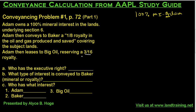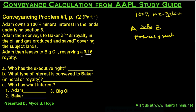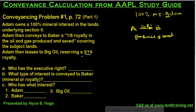Adam then conveys to Baker a one-eighth royalty interest in the oil and gas produced and saved. What they're trying to teach you here is how to watch out for language that indicates whether an instrument is a royalty interest or a mineral interest. This is relevant to us as landmen because we're not going to take a lease from the royalty interest owner — we're only going to take a lease from someone who owns the minerals. So when Adam conveys to Baker this one-eighth royalty, he's not conveying a mineral interest; he's only conveying a royalty interest.